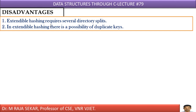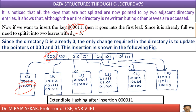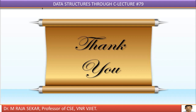There are a few disadvantages. Extendable hashing requires several directory splits — you must keep splitting when you are not able to keep an element in your leaf and must increase its size. In extendable hashing, there is a possibility of duplicate keys, which is not desirable. As duplications are not allowed, this is another disadvantage. I request you to go through this once or twice — it may seem difficult but it is not at all. If you have any difficulty, keep a comment on YouTube and I will answer. Thank you very much.